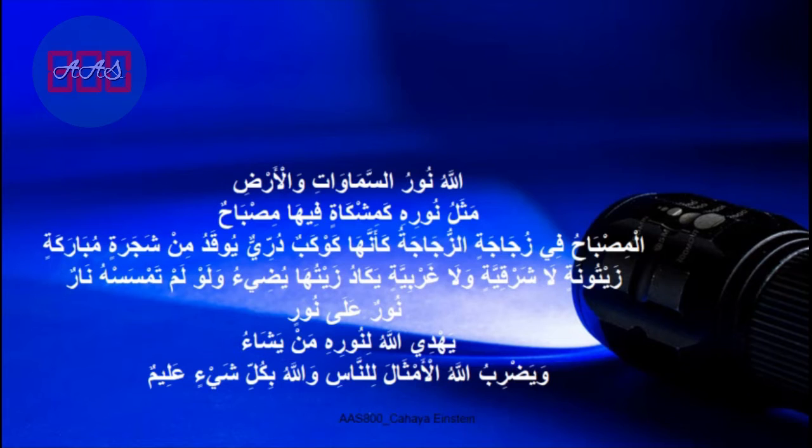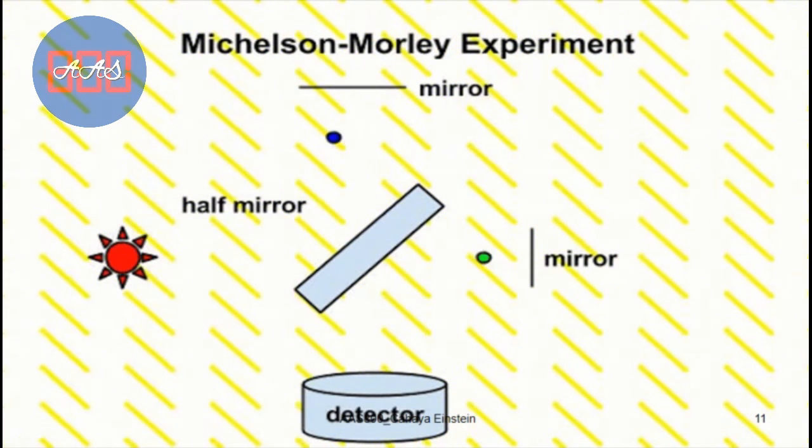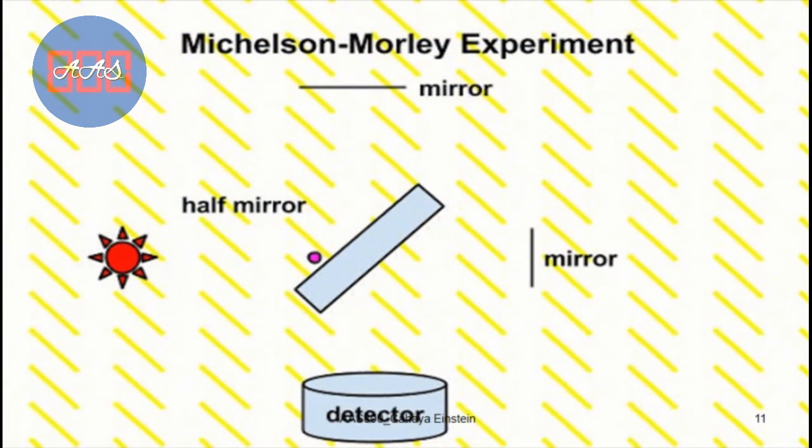Then the second, at the beginning of the 20th century, there was a fundamental question: light waves from outer space that propagate to earth, with what medium? Because waves propagate, they require a medium. So at that time it was hypothesized with what is called ether. Then an experiment was conducted by Michelson-Morley.